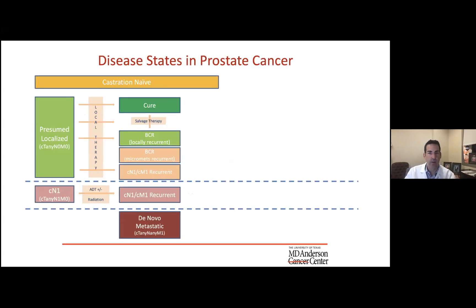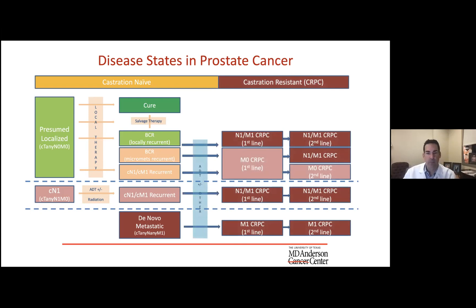When we think about prostate cancer, there's a castration-naive setting where you can have presumed localized disease or clinically apparent metastases — nodal or de novo metastatic — where you have lymph nodes at the common iliacs or above, or any bone or visceral metastases. We provide local therapies to presumed localized and clinically node-positive prostate cancers. With clinically node-positive disease, we're assuming a non-curable yet treatable state, and as we move toward localized disease, the likelihood of cure increases. Systemic therapies that cause castration resistance come into play, including M0 CRPC scenarios, which may no longer exist with newer advanced imaging.